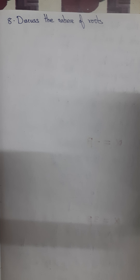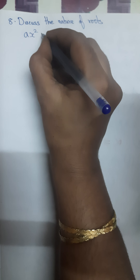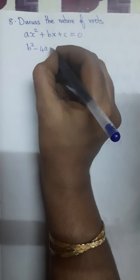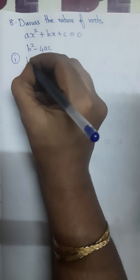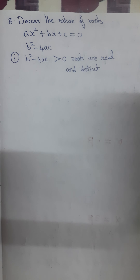First we should know what is the nature of the roots of a quadratic equation. The general form of a quadratic equation is ax² + bx + c = 0. We need to find the value of b² - 4ac, because the nature of the roots depends upon this value. If b² - 4ac is greater than 0, then the roots are real and distinct — that means there will be two different roots.